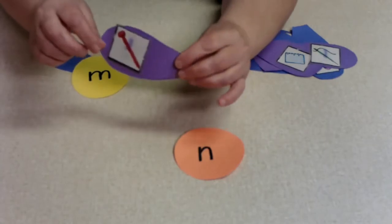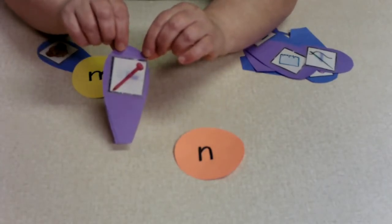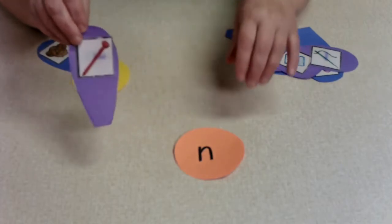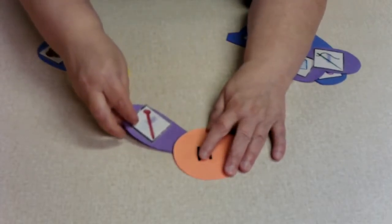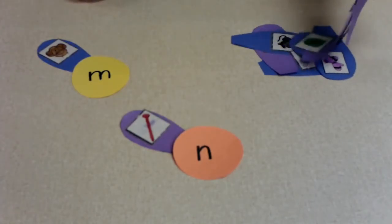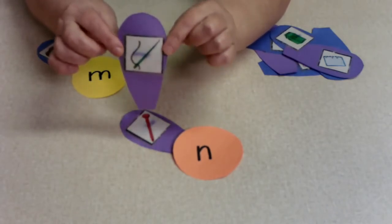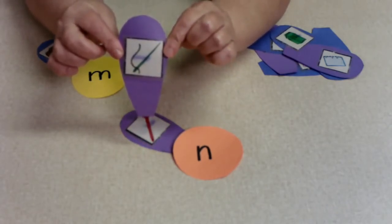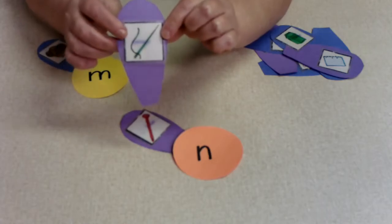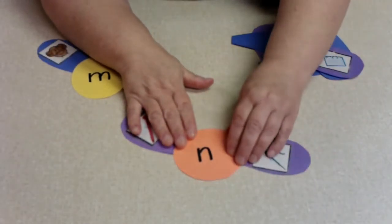And here we have a picture of a nail. Nail begins with the N sound. And here we have a needle, as in needle and thread. Needle begins with the N sound.